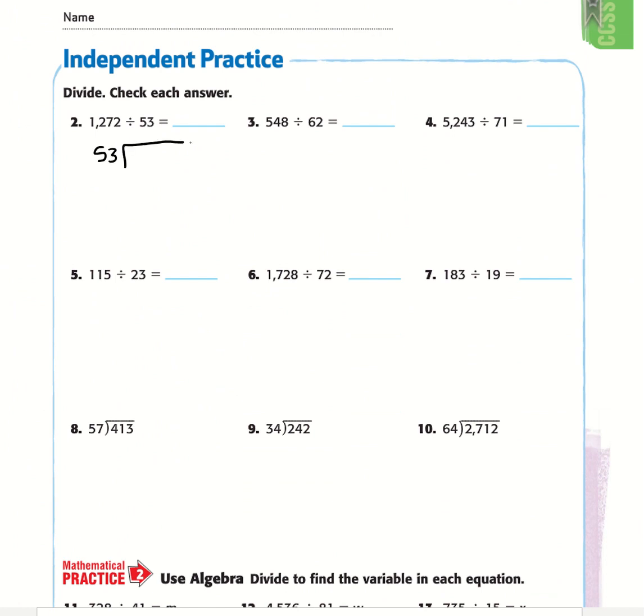We have 53 as our divisor and 1,272. 53 cannot go into 12. 53 does go into 127. I'm going to say that's going to go in twice. I'm just kind of using a number. 2 times 53 is going to be 106. We subtract. Divide, multiply, subtract, bring it down, repeat. We subtract, it's going to be 1, 2, 21.